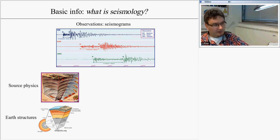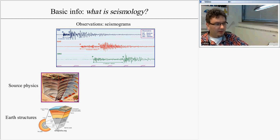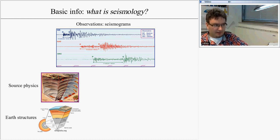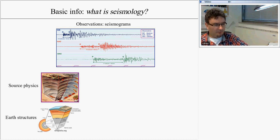Seismology has a very basic division. We can divide seismology into source physics — the part that deals with the properties of seismic events: the hypocenter, the epicenter, the mechanism of seismic events, and the physical parameters of the source. The second part of seismology is the science that deals with Earth's structure, from the surface down to the center of the Earth.